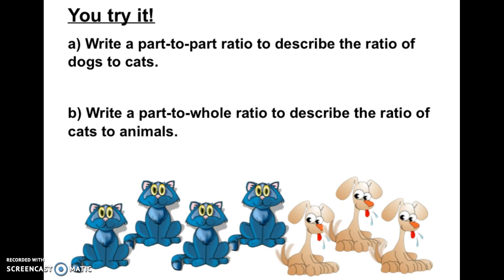In this case, we see that there are 3 dogs and 4 cats. So our ratio of dogs to cats is 3 to 4, and the order is important because we said dogs first and then cats. For the second one — the part-to-whole ratio of cats to animals — there are 4 cats and 7 total animals, so the ratio of cats to animals is 4 to 7.